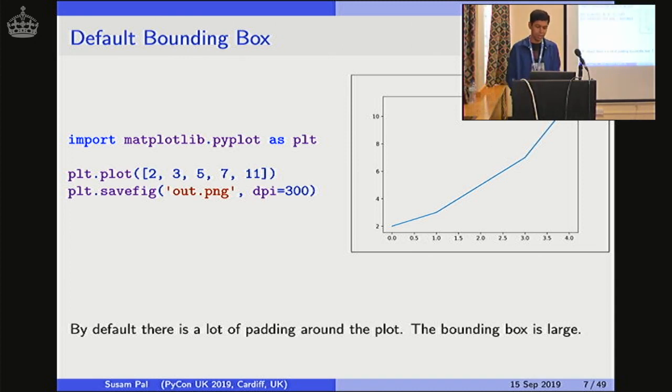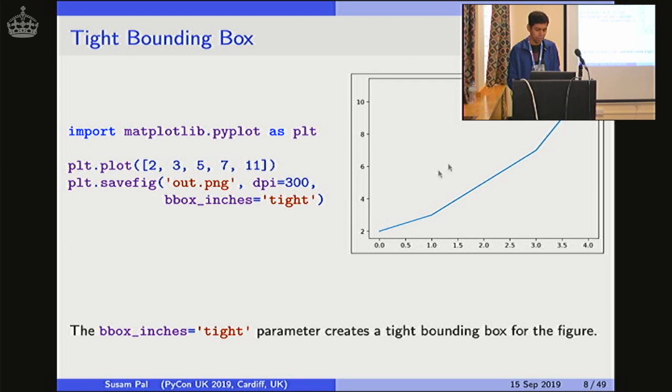So to get rid of this additional white space, I like to compute a tighter bounding box so that most of this white space is gone and it is more suitable to be included in a web page which has text paragraphs. I do that using the bbox_inches keyword argument with a value of tight. This computes a much tighter bounding box like this.